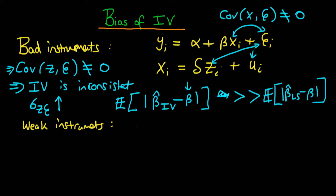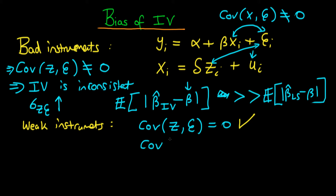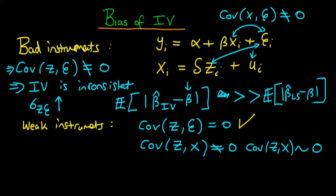Now for weak instruments, which as the name suggests isn't quite as bad as having a bad instrument. Recall the two conditions for IV to be consistent: first, cov(z, epsilon) = 0, which is violated with a bad instrument but satisfied for a weak instrument. The second condition is that cov(z, x) ≠ 0. With weak instruments, cov(z, x) is very, very small — in practice it might be zero.